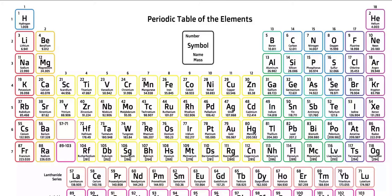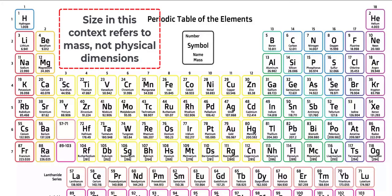We will learn as we look at the elements of increasing size that the number of protons increases. Most elements have a similar number of neutrons in the nucleus as they do protons, but that can vary with the isotope.